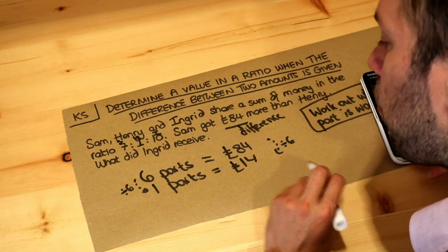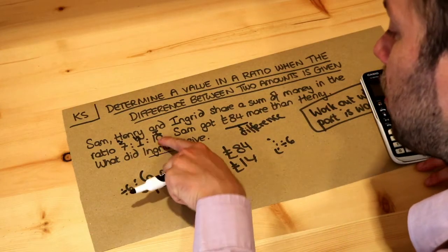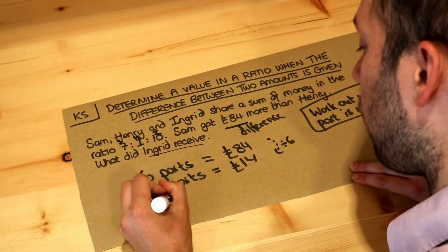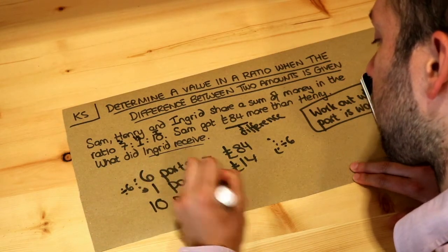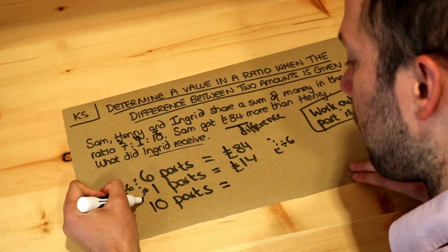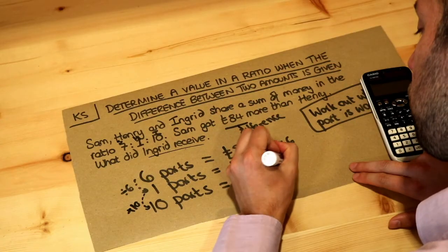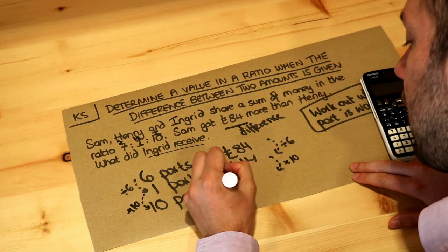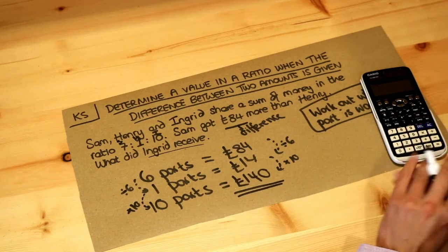We want to work out what Ingrid received. In the ratio, Ingrid got 10 parts, so we need to work out what 10 parts is worth. If one part is worth £14, then 10 parts is going to be 10 times more, so we just need to multiply by 10. 14 times 10 is £140. And that's the final answer.